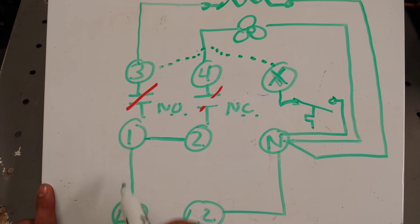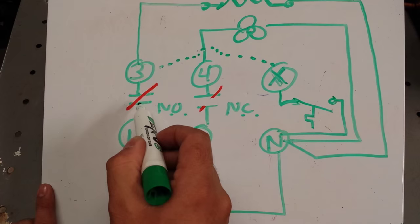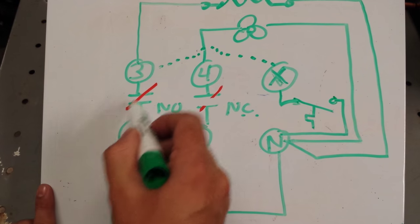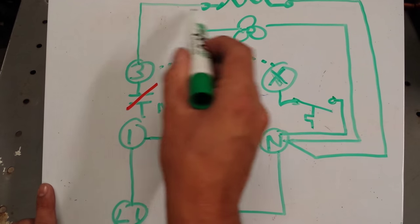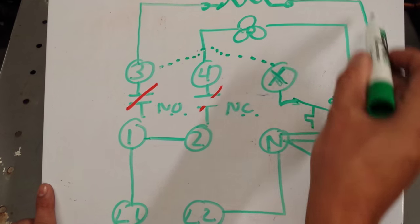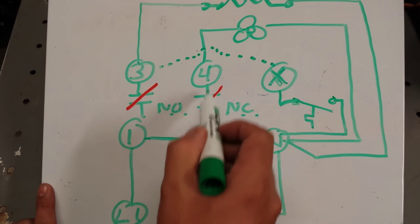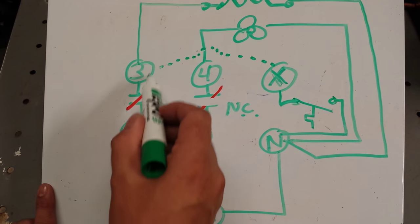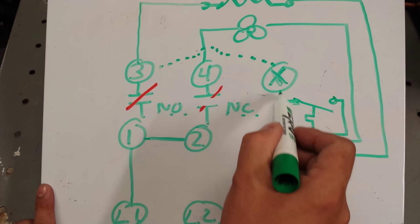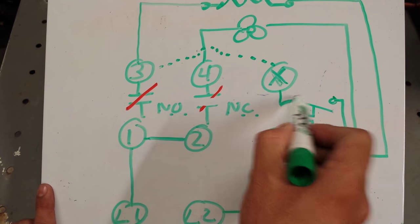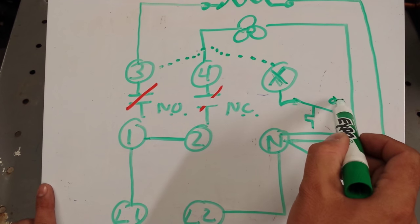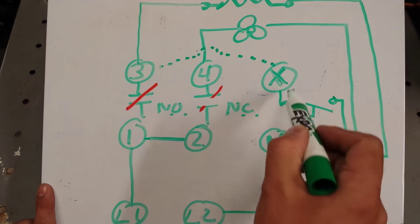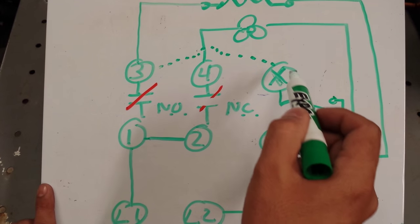Alright, so what that means is right now, the way our circuit is now, it's in defrost. This contact point is closed, defrost heaters are energized, complete the circuit there. This circuit is open, fans are off. L1 is also being supplied here in the background, terminal X, which feeds that L1 to the thermostat here. When this thermostat closes, it's going to complete a circuit.